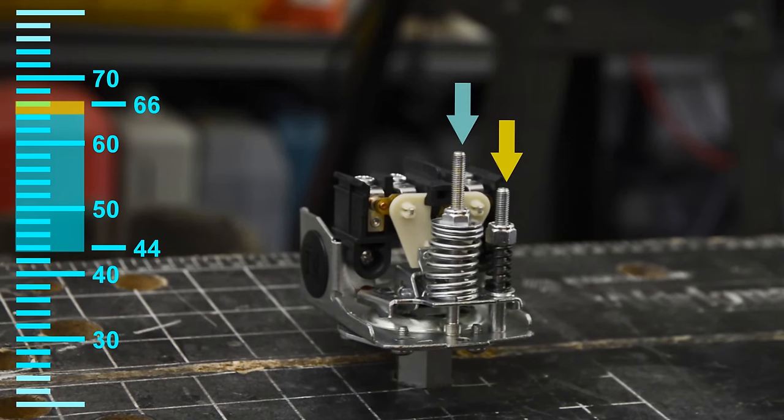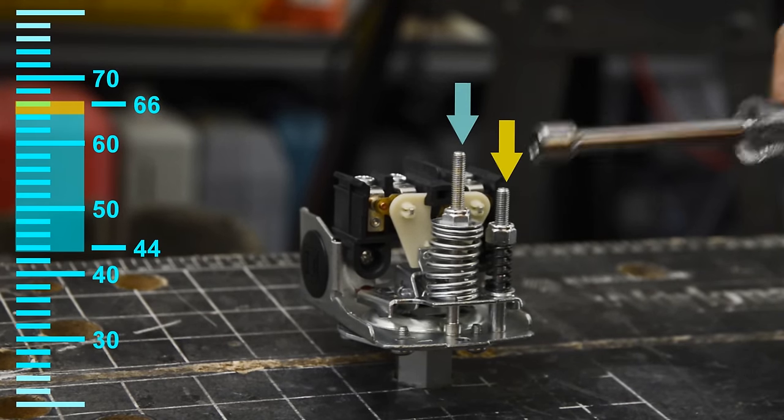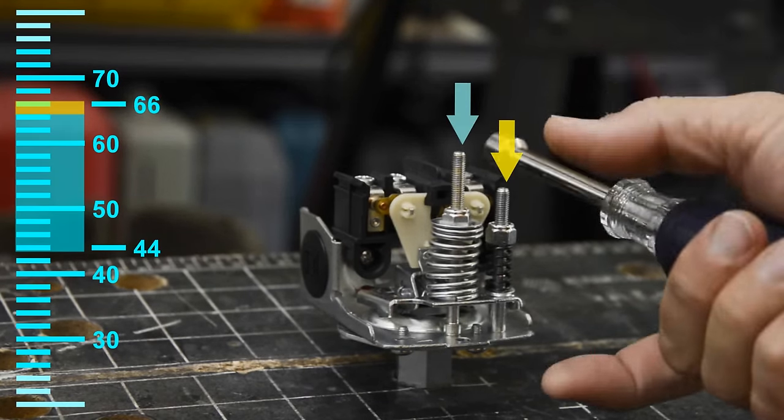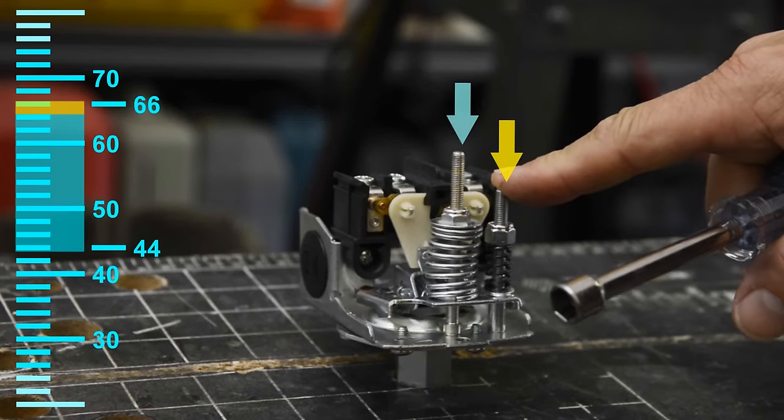So that's what these adjustments do. The center one, again, is your range. You're moving that range up and down. The outside is the cut-off only.